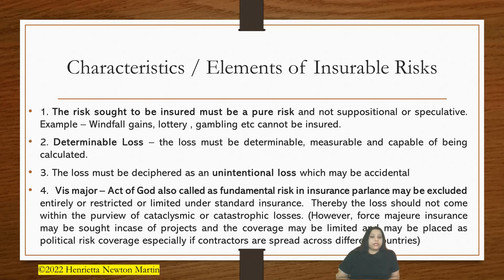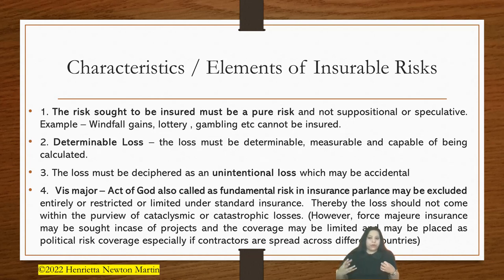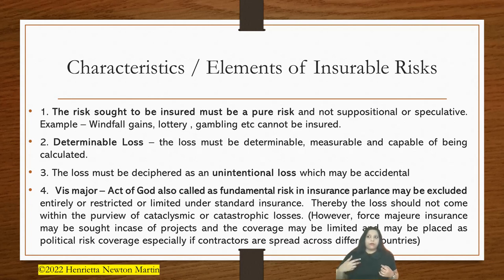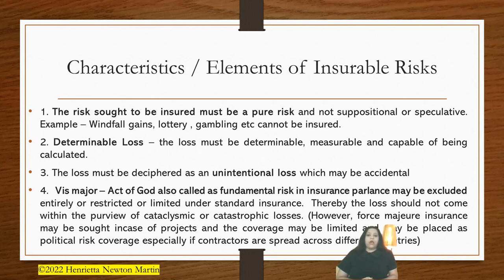Next are the characteristics or elements of insurable risk. The first element that underwriters look at to determine whether a risk is insurable is whether the risk is a pure risk and not a suppositional, imaginary, or speculative risk. An example of speculative risk is something that depends on market rise or market fall — financially speculative risk. Windfall gains or gambling cannot be insured because they are not pure risks but are suppositional or speculative in nature.